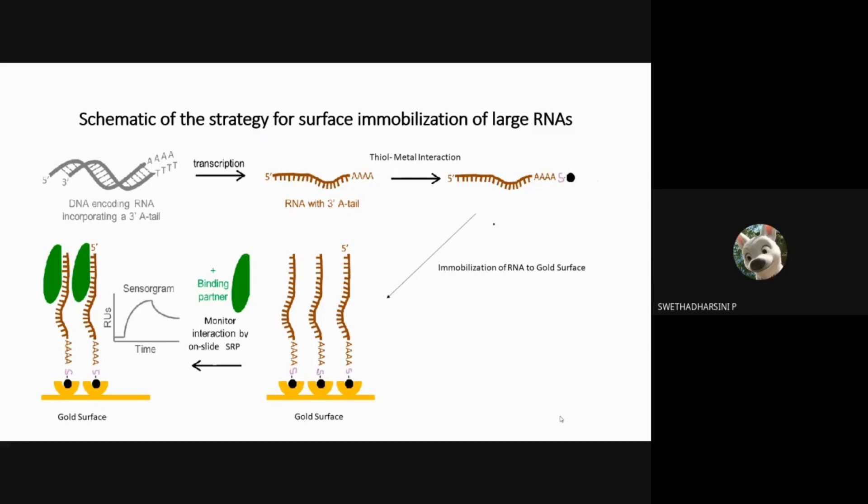The template RNA which is bound to the gold chip is actually a specific conserved region in the coronavirus. This is linked with the gold via thiol linkage.